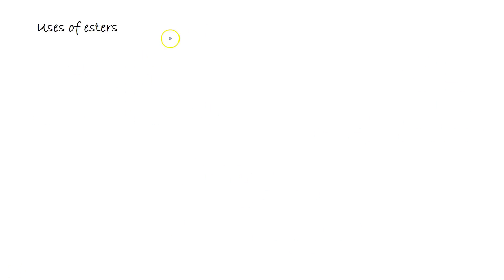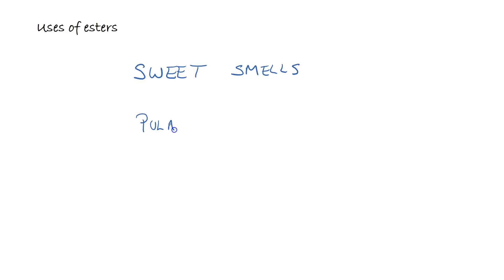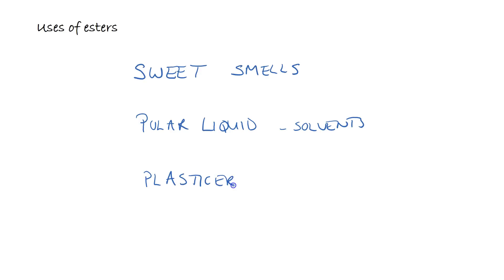Looking at the uses and reactions of esters: esters have sweet smells and are often used in flavourings — the classic lab example produces a pear drop smell. They are polar liquids and can be used as solvents in a variety of organic reactions. Esters are also used as plasticizers in polymers, making the polymer more flexible. However, over time the plasticizer leaks out and the polymer becomes brittle.